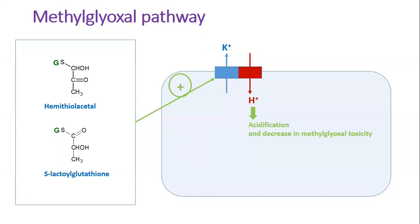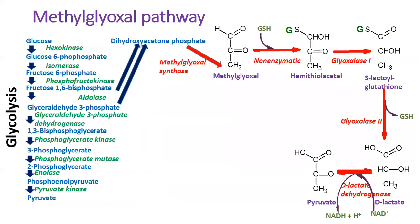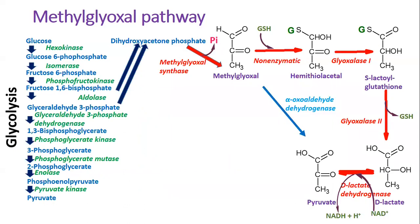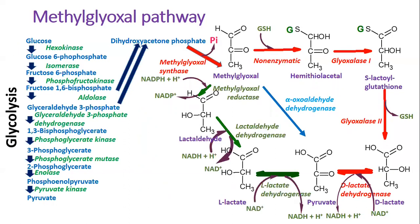Glutathione conjugates such as hemithioacetal and S-lactoylglutathione are not only intermediates in detoxification but also activators of potassium efflux systems in some bacterial species. These systems are believed to form ion channels in the inner membrane of gram-negative bacteria, which can cause potassium efflux and proton entry, resulting in acidification of the cytoplasm. This acidification makes electrophiles such as methylglyoxal less active and less toxic. There are additional pathways that handle methylglyoxal, including one involving alpha-oxoaldehyde dehydrogenase and another that converts methylglyoxal to lactaldehyde and then to L-lactate.